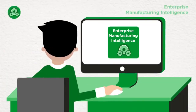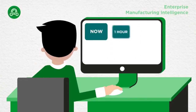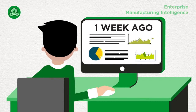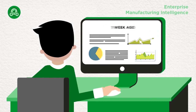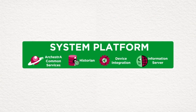Take advantage of System Platform's Enterprise Manufacturing Intelligence app to gather, store, and report on both historical and real-time operational data, using KPI dashboards to visualize, tune, and maximize operations for the entire enterprise.